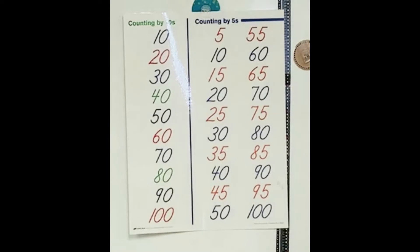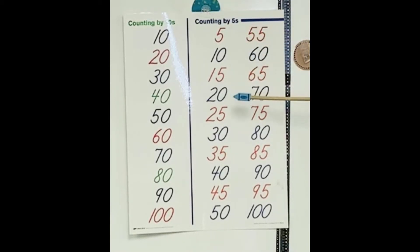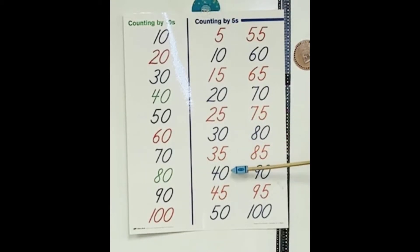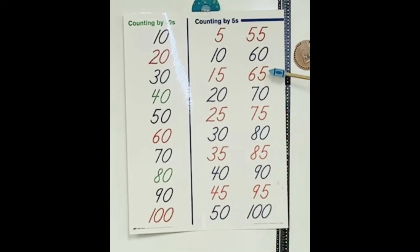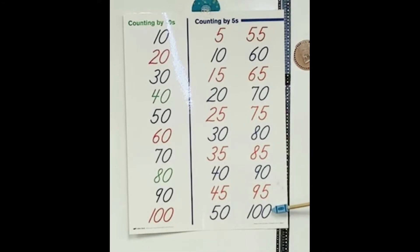Now, counting by fives from five to one hundred. Together class. Five, ten, fifteen, twenty, twenty-five, thirty, thirty-five, forty, forty-five, fifty, fifty-five, sixty, sixty-five, seventy, seventy-five, eighty, eighty-five, ninety, ninety-five, one hundred.